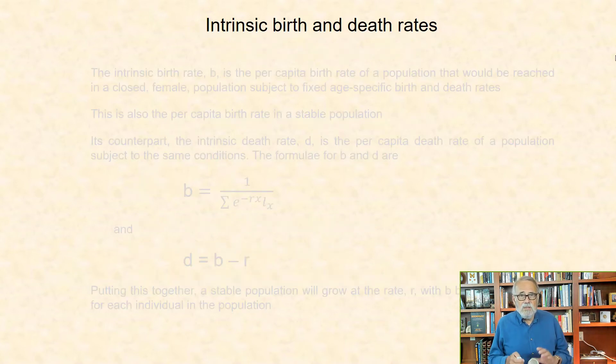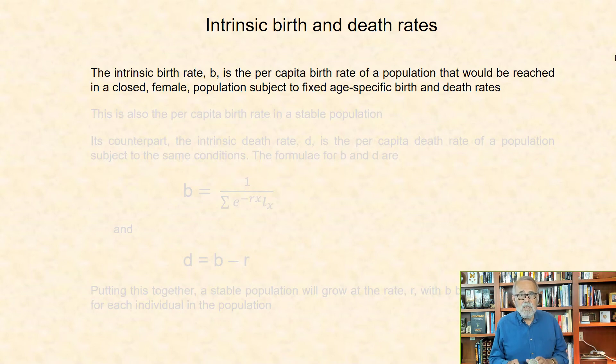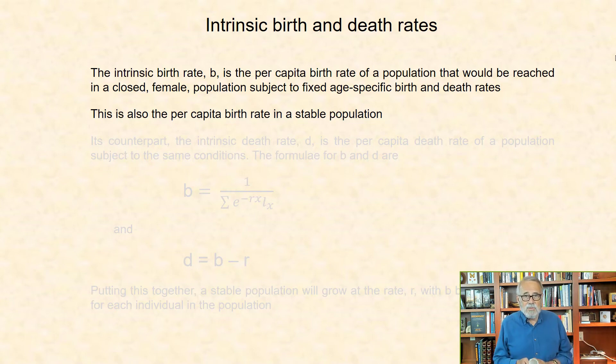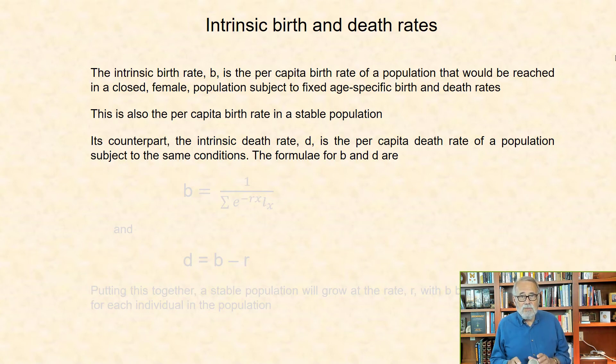Intrinsic birth and death rates. The intrinsic birth rate, b, is the per capita birth rate of a population that would be reached in a closed female population, subject to fixed age-specific birth and death rates. This is also the per capita birth rate in a stable population. Its counterpart, the intrinsic death rate, d, is the per capita death rate of a population subject to the same conditions. The formula for b and d are shown here, with b equal to the inverse of the sum of exp(-r*x)*lx, and d equal to 1 minus b.